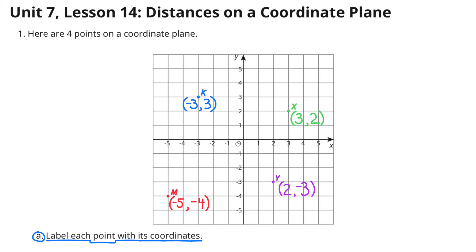The coordinates for point M are negative 5 and negative 4 — that's 5 to the left along the x-axis and 4 down along the y-axis. And the coordinates for point Y are 2 and negative 3 — that's 2 to the right along the x-axis and 3 down along the y-axis.